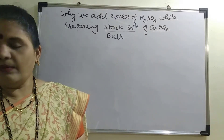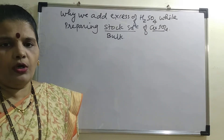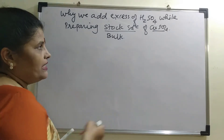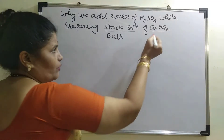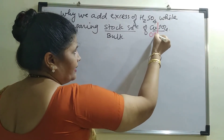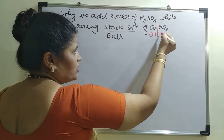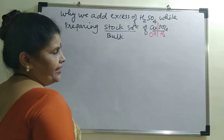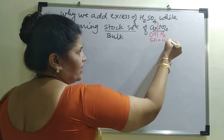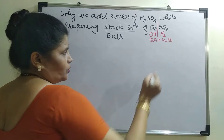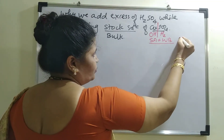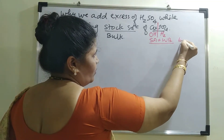To understand why, let us first understand what type of salt copper sulfate is. If we split copper sulfate, we get copper hydroxide and sulfuric acid — meaning it is a salt of a strong acid and a weak base. So what will be the pH of the solution? The pH of the solution will be below 7.